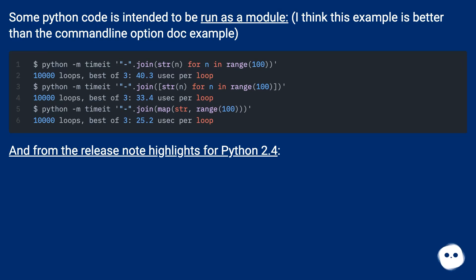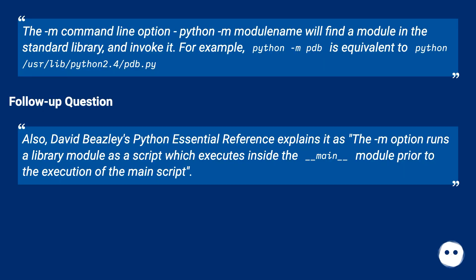From the release note highlights for Python 2.4: the `-m` command-line option — `python -m module_name` — will find a module in the standard library and invoke it. For example, `python -m pdb` is equivalent to `python /usr/lib/python2.4/pdb.py`.